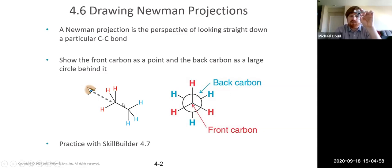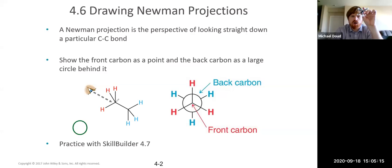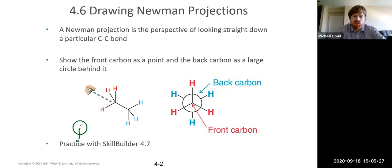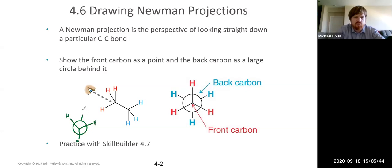Let me draw this for you so you can see what it looks like. I'm going to use the circle tool. You start with a circle. Looking from this angle, this hydrogen is in the plane and pointing down, so draw it down from the center — that's the front carbon. Then there's one up and to the right and up and to the left. For the back carbon, there's a hydrogen sticking up, so draw it from the circle edge, then down and to the right and down and to the left. That's how you draw these Newman projections.